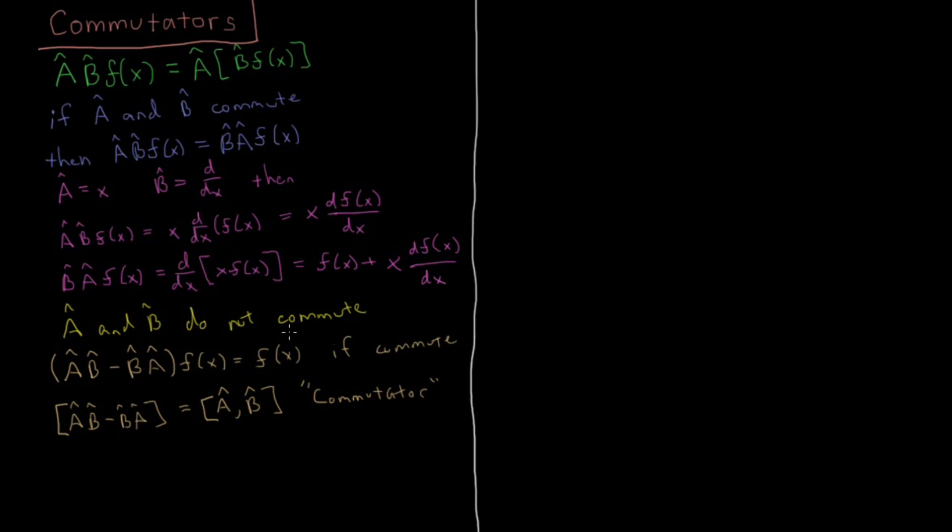If there's some f of x such that the commutator acting on f of x equals zero for all values of A and B, then A and B commute.